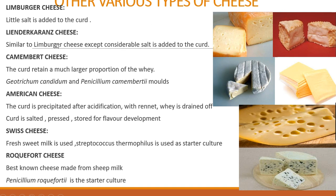Limburger cheese has very little salt added, which promotes a variety of organisms on its surface and gives it a distinct flavor. Linder Franzas cheese is similar to Limburger but contains a bit more salt. Camembert cheese retains a larger portion of the whey and is molded into small cakes, then placed in a curing room maintained at near room temperature.